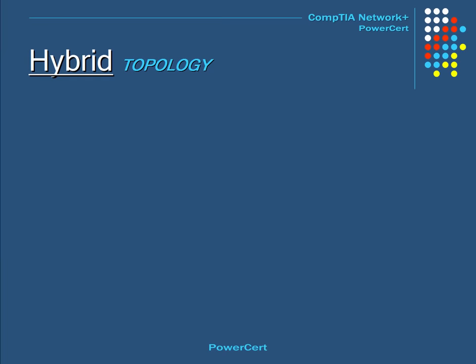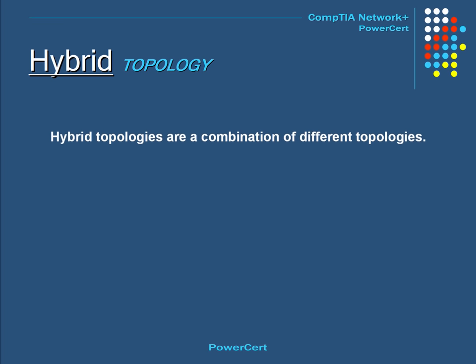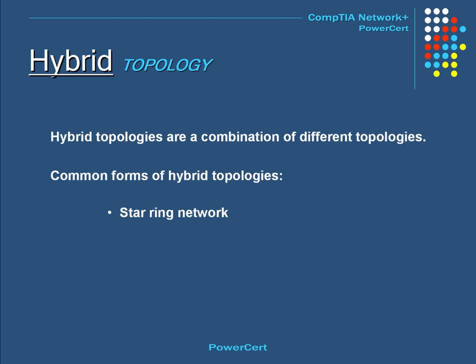Topologies can also be combined with other topologies if needed, and these are known as hybrid topologies. Hybrid topologies can offer the best of both worlds. In fact, a lot of businesses use some form of a hybrid topology to suit their growing needs. The most common forms of hybrid topologies are the star ring network and the star bus network.